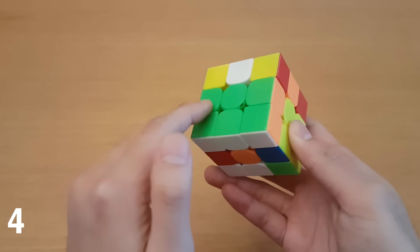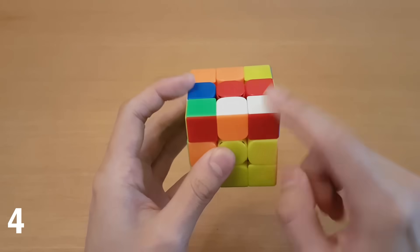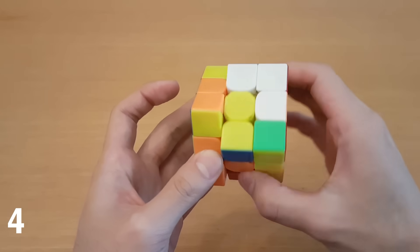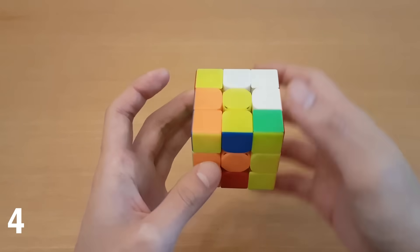Number four, using the M slice for a second block. So here, I have my first block on green with white bottom. I will pair up these two pieces now. And then generally, how we use the M slice, in this case, I'm going to use a wide move, which is equivalent to using the M slice as well.